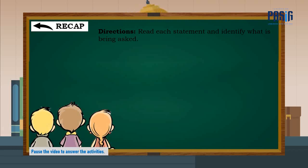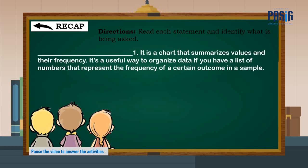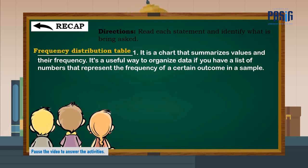Directions: read each statement and identify what is being asked. Number one: it is a chart that summarizes values and their frequency. It is a useful way to organize data if you have a list of numbers that represent the frequency of a certain outcome in a sample. The correct answer is frequency distribution table.